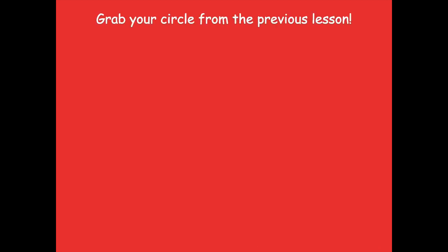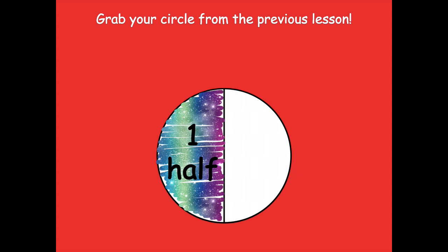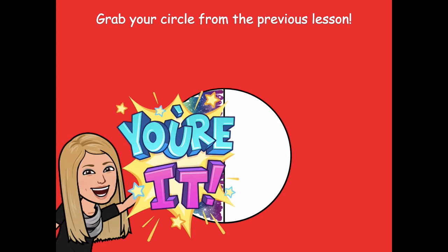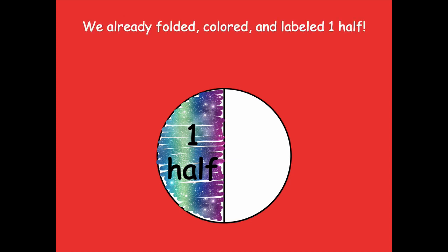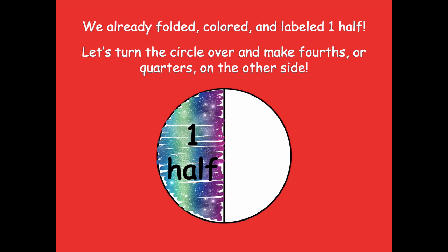Grab your circle from the previous lesson — this guy right here. Pause if you need time to find it. We've already folded, colored, and labeled one half. Let's turn the circle over and make fourths — or quarters — on the other side. Fourths and quarters mean the same thing. It helps me to think about fourths as quarters because you need four quarters to make one dollar. So I think about the coin quarters going along with fourths — just a little trick to help remember.